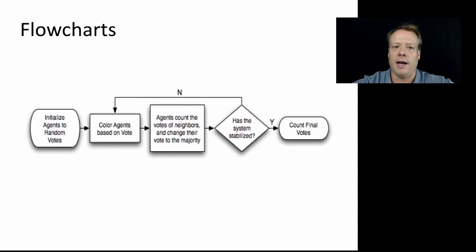One of them is known as a flowchart. You might have seen this from software engineering diagrams. You can write this out: initialize agents to random votes, color the agents based upon their vote, agents count the votes of their neighbors and change their vote to whatever the majority is. Then ask if the system is stabilized—has anybody changed their vote since the last time? If no, go back and do the whole thing over again. Otherwise, count the final votes. You can provide the political scientist with this document as one example of your understanding of the conceptual model.